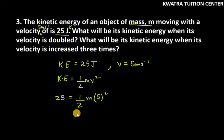So, how much will your mass be? Cross multiplication use. 25 into 2. And this is 5 square. 25 will come down in division. 25 to 25 is cancelled. Mass value is 2 kg.